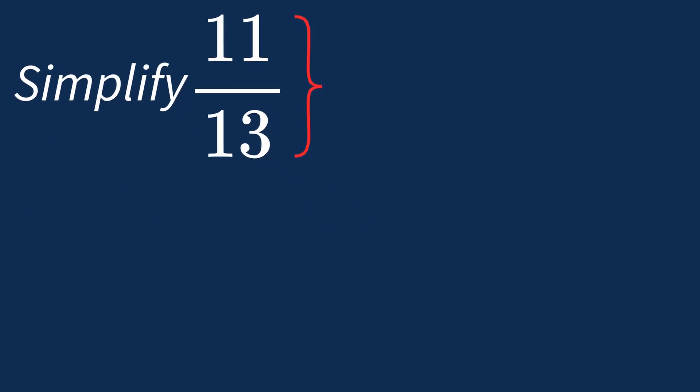When simplifying a fraction like 11 over 13, the first step is to check if there's a common factor between the top number, the numerator, and the bottom number, the denominator.